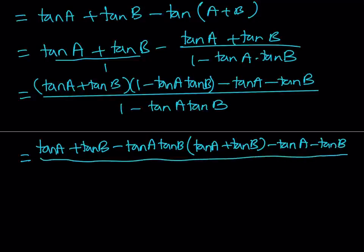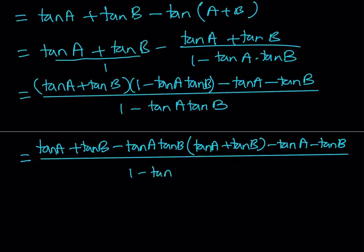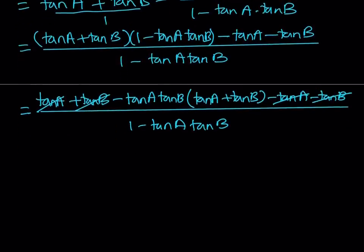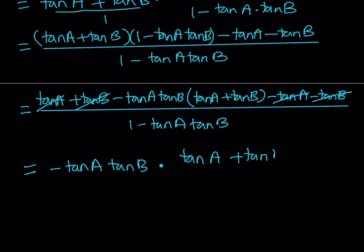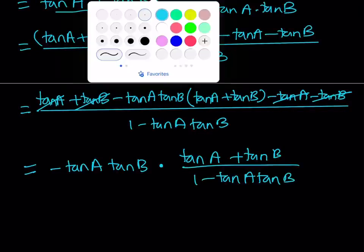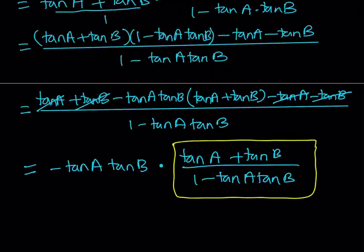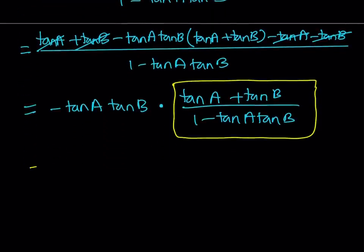Dividing everything by 1 minus tangent A times tangent B, notice that tangent A minus tangent A equals zero and tangent B cancels out. We can separate the product as negative tangent A times tangent B, multiplied by tangent A plus tangent B divided by 1 minus tangent A times tangent B. This expression should look familiar — it's the formula for the sum of two tangents, so we can replace it with tangent of (A plus B).